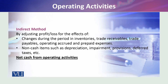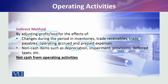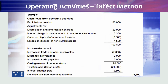In the indirect method, we cannot directly approach the cash inflows and outflows. Instead, we start with the profit figure and adjust it with changes during the period in inventory, trade receivables, trade payables, operating-related accruals and prepayments. We also adjust for non-cash items such as depreciation, impairment, provisions, and deferred tax. After these adjustments, we arrive at net cash flow from operating activity.